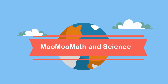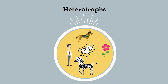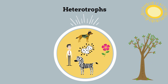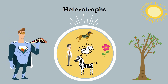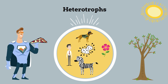Welcome to Moo Moo Math and Science. In this video, I'd like to talk about heterotrophs. Heterotrophs are individuals that cannot generate energy using photosynthesis, but instead rely on others for their energy. Although all heterotrophs cannot practice photosynthesis, there are several different types.